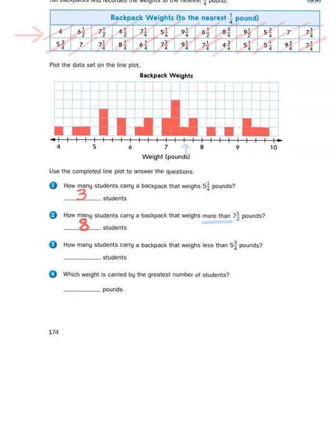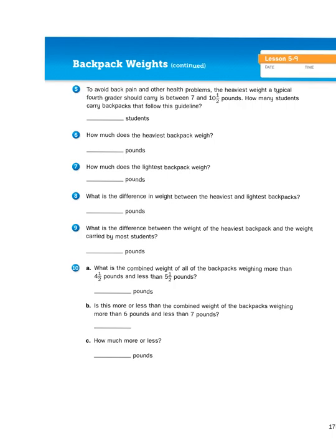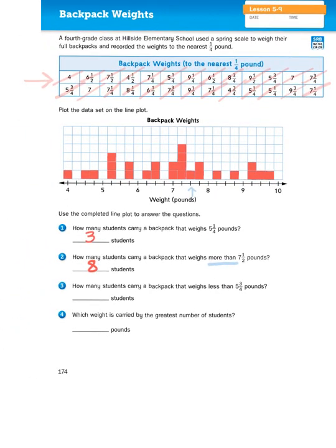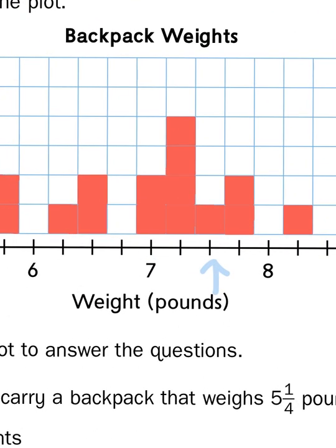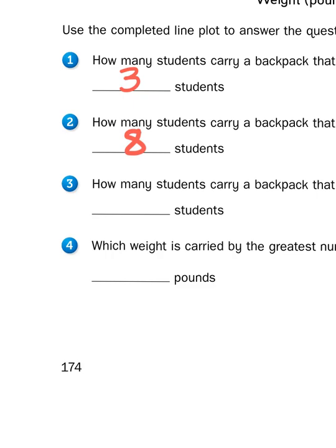Let's skip ahead to a couple of problems on page 175. As you can see, the units are listed next to the blank, and the first several problems say students as the unit of measurement. Starting with number four, they kind of switch things up because they want you to interpret the data differently. For example, number four says which weight is carried by the greatest number of students. When I look at that graph I can see that there are four squares that are filled in over seven and a quarter. So instead of writing four for the number of students, I'm going to write the measurement, which is seven and one quarter pounds.